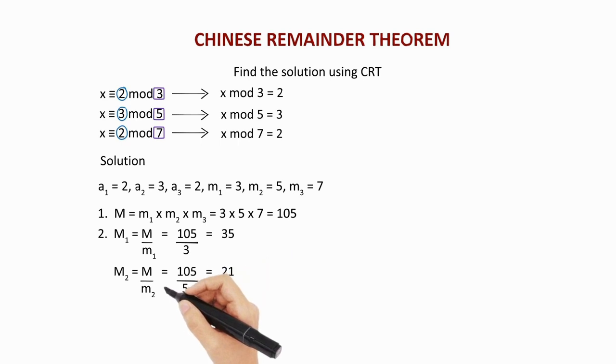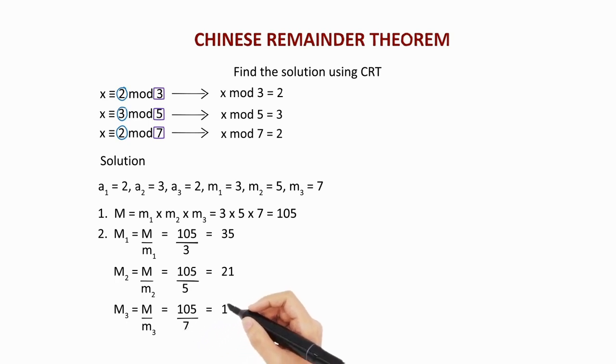Capital M3 equals capital M divided by m3, which is 105 divided by 7, giving you the answer as 15.